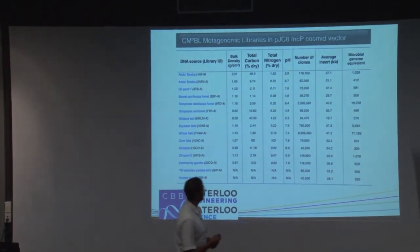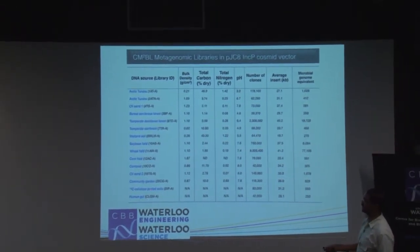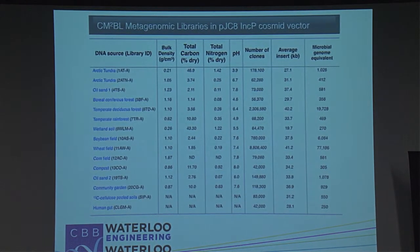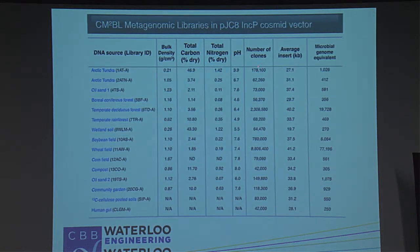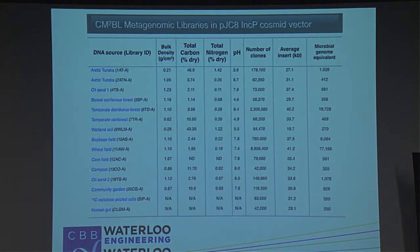Here are some examples of the libraries we made. Most are from different soils, but we also have one from human gut — fecal samples we call the Charles Lab gut microbiome, a mixture from six or seven members of my lab. The best library has nine million clones all in one sample, which is equivalent to about 77,000 microbial genomes — a large number of genomes and genes represented.